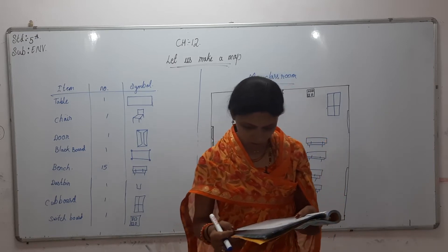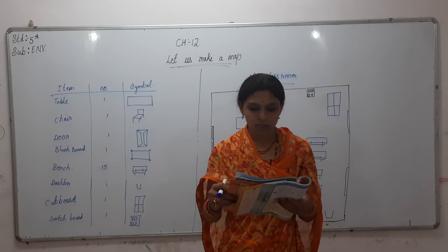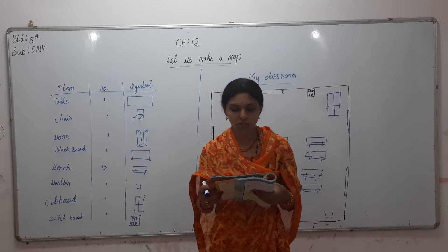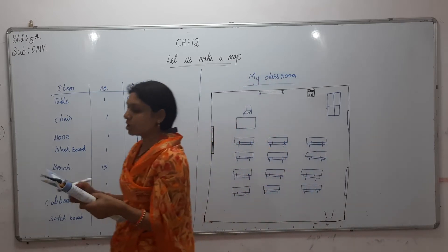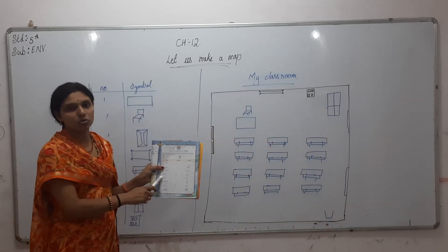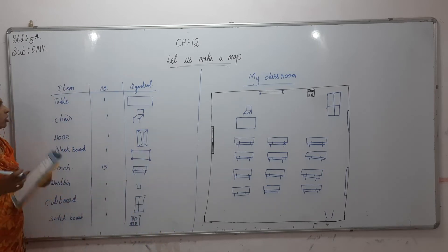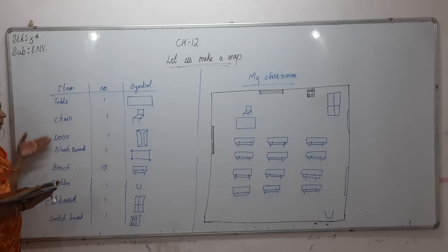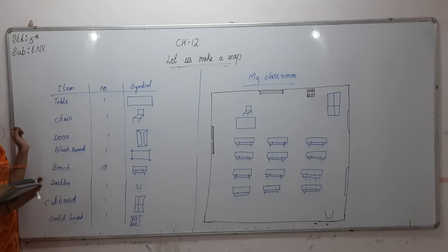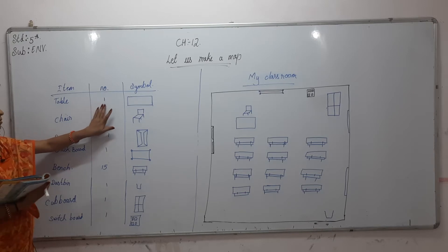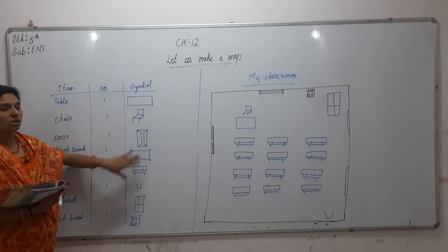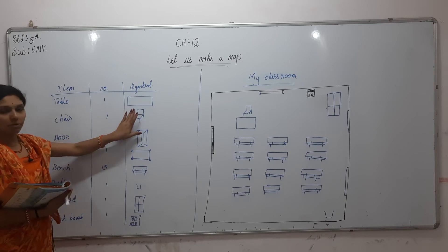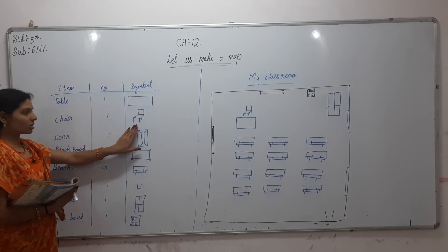Open page number 93 in your Environment textbook. Chapter 12 — 'Let Us Make a Map'. Make a list of things in the classroom, write the number of their quantity, and give a symbol to each item. You have to make a list of different items present in your classroom — how many tables, how many chairs — and draw one symbol for each.